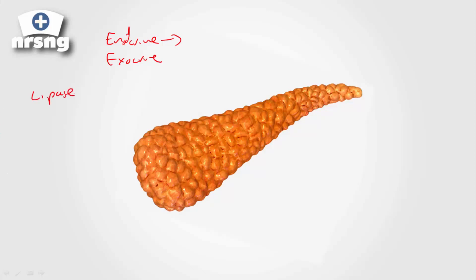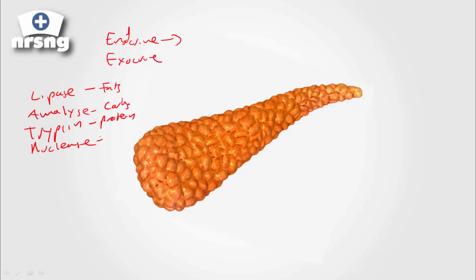The pancreas has lipase, amylase, trypsin, and nuclease. Lipase helps with digestion of fats, amylase with carbohydrates, trypsin helps with protein digestion, and nuclease helps with nucleic acids. The pancreas also secretes insulin and glucagon.